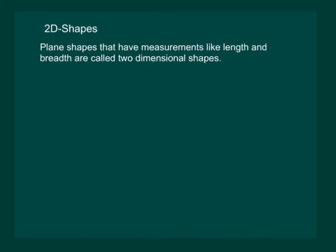We have already learned that plane shapes that have measurements like length and breadth are called two-dimensional shapes. A square, a rectangle, a triangle and a circle are examples of 2D shapes, or two-dimensional shapes.